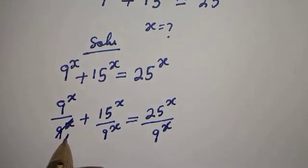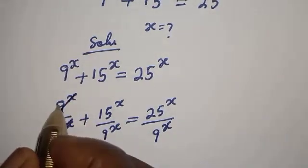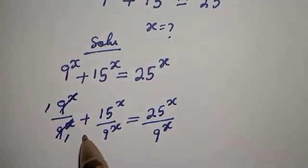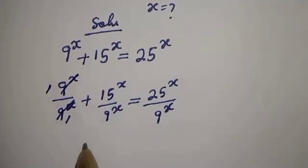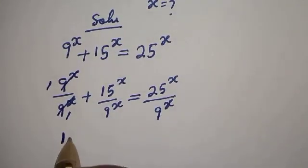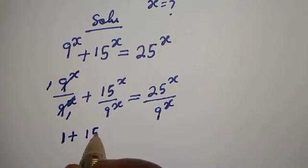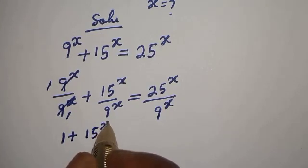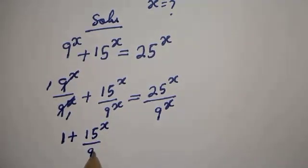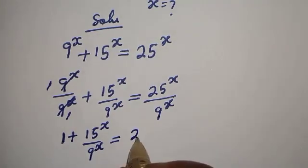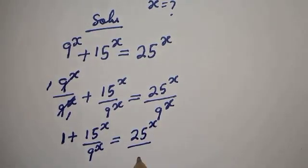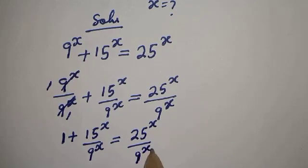9 raised to the power s over 9 raised to the power s gives 1. So we have: 1 plus 15 raised to the power s over 9 raised to the power s, is equal to 25 raised to the power s over 9 raised to the power s.